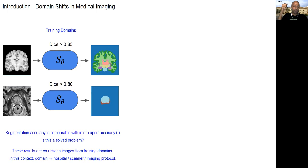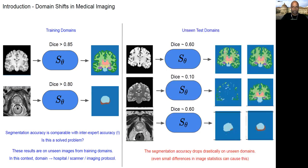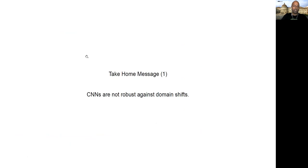So the domains that were used to train these networks. And in this context, by a domain, we mean things like the hospital, the scanner which was used to acquire the image, the imaging protocol and so on. So what happens when we change the domain? It turns out that the performance drops quite a bit. For example, here, the dice numbers go from 85 to something like 60. And in this case, even to very small numbers when the protocol itself changes. But actually, even for relatively small changes in the images, we see quite remarkable dice drops. So the first take home message is that CNNs are not robust against domain shifts.